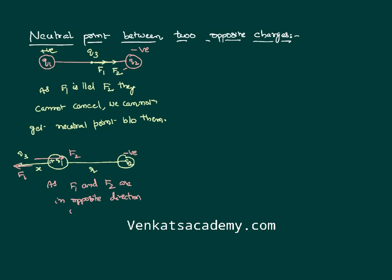Since f1 and f2 are in opposite directions, if their magnitudes are equal, the point can become a neutral point. So there is a possibility of a neutral point beyond the charges, but there is no possibility between the charges.